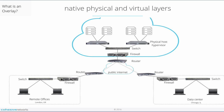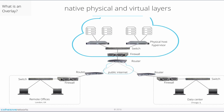So what is an overlay? In this diagram, this is a simple topology with a data center based in Chicago and a remote office in London. Both locations use the public internet to connect to their cloud resources. The cloud data center has virtual instances, or virtual machines. Each VM runs in a physical host or hypervisor connected to a switch. Each switch is connected to a firewall, then to a router, and this edge router provides the cloud's connectivity to the internet.